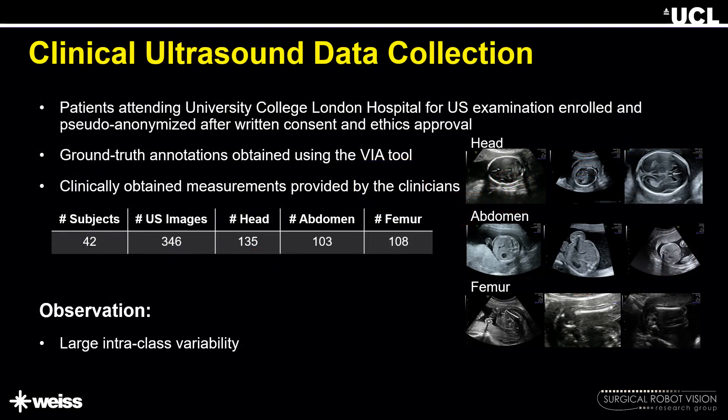We obtained data from 42 pregnancies — in total around 350 ultrasound images of the standard planes. The data was collected at University College London Hospital. Patients attending the hospital for ultrasound examination were enrolled, and the data was pseudo-anonymized by a clinical fellow after obtaining written consent and ethical approval. Ground truth annotations for segmentation were obtained using the VIA annotation tool, while clinically obtained measurements were provided by the clinicians.